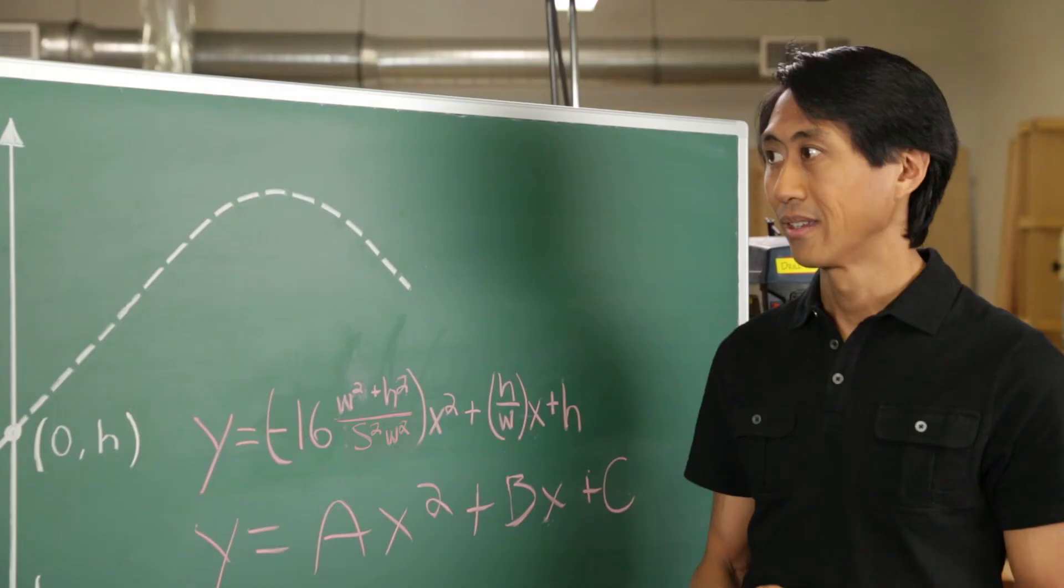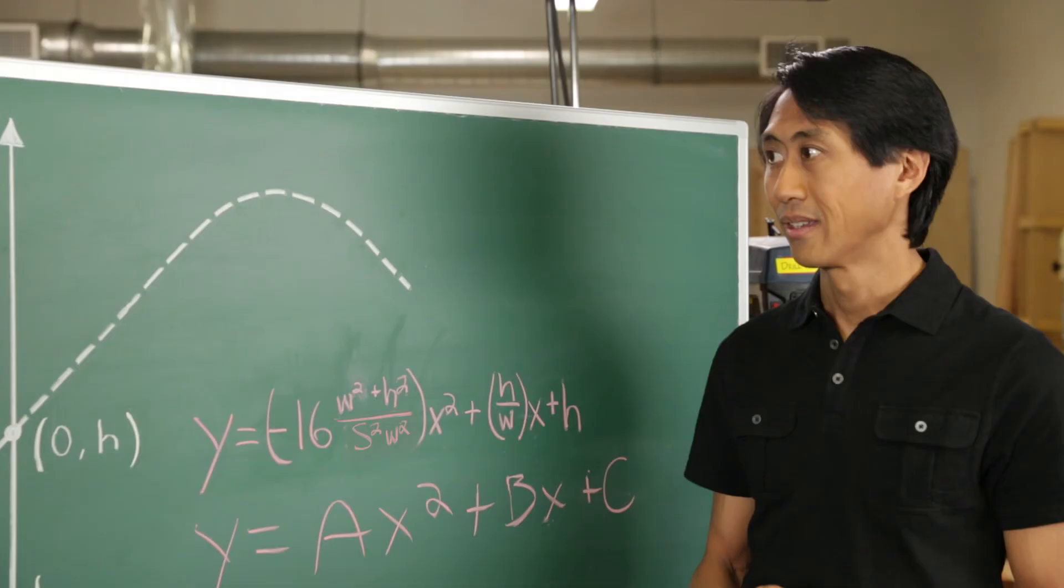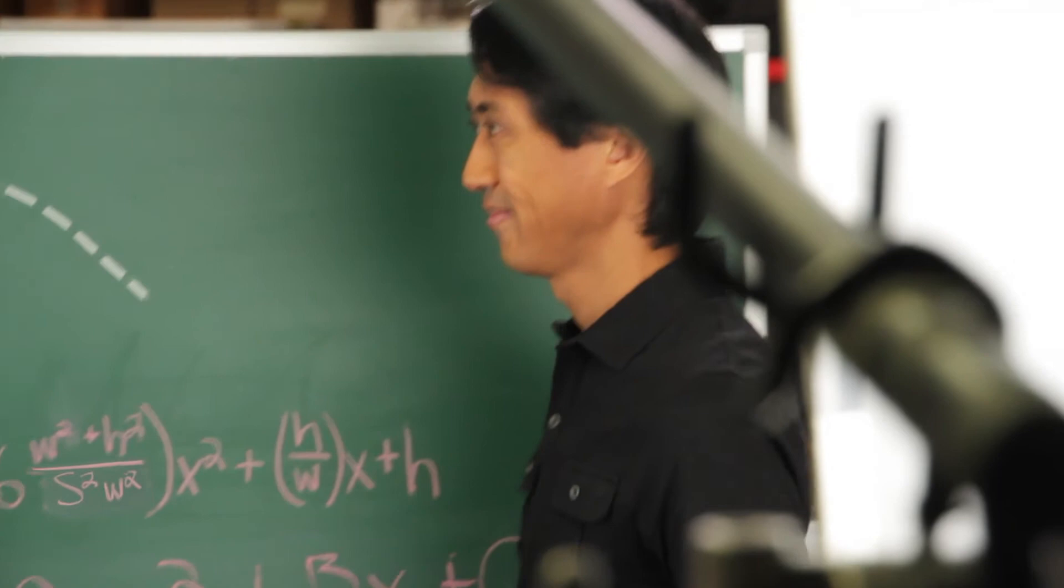It is. Now, remember, the X squared term is negative, so it has less effect, and the bike goes higher. That makes sense because if the bike is going faster, it should go higher.